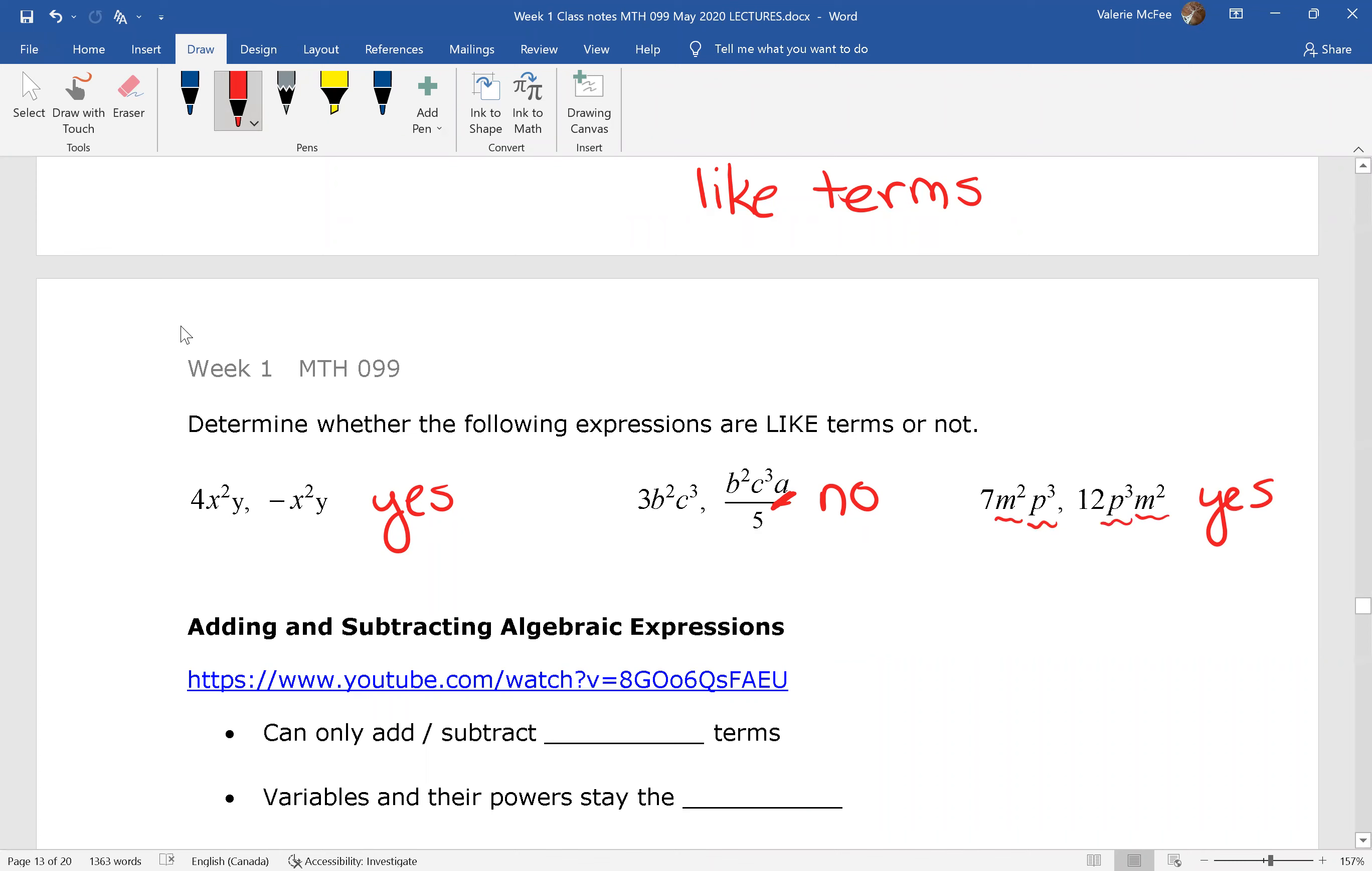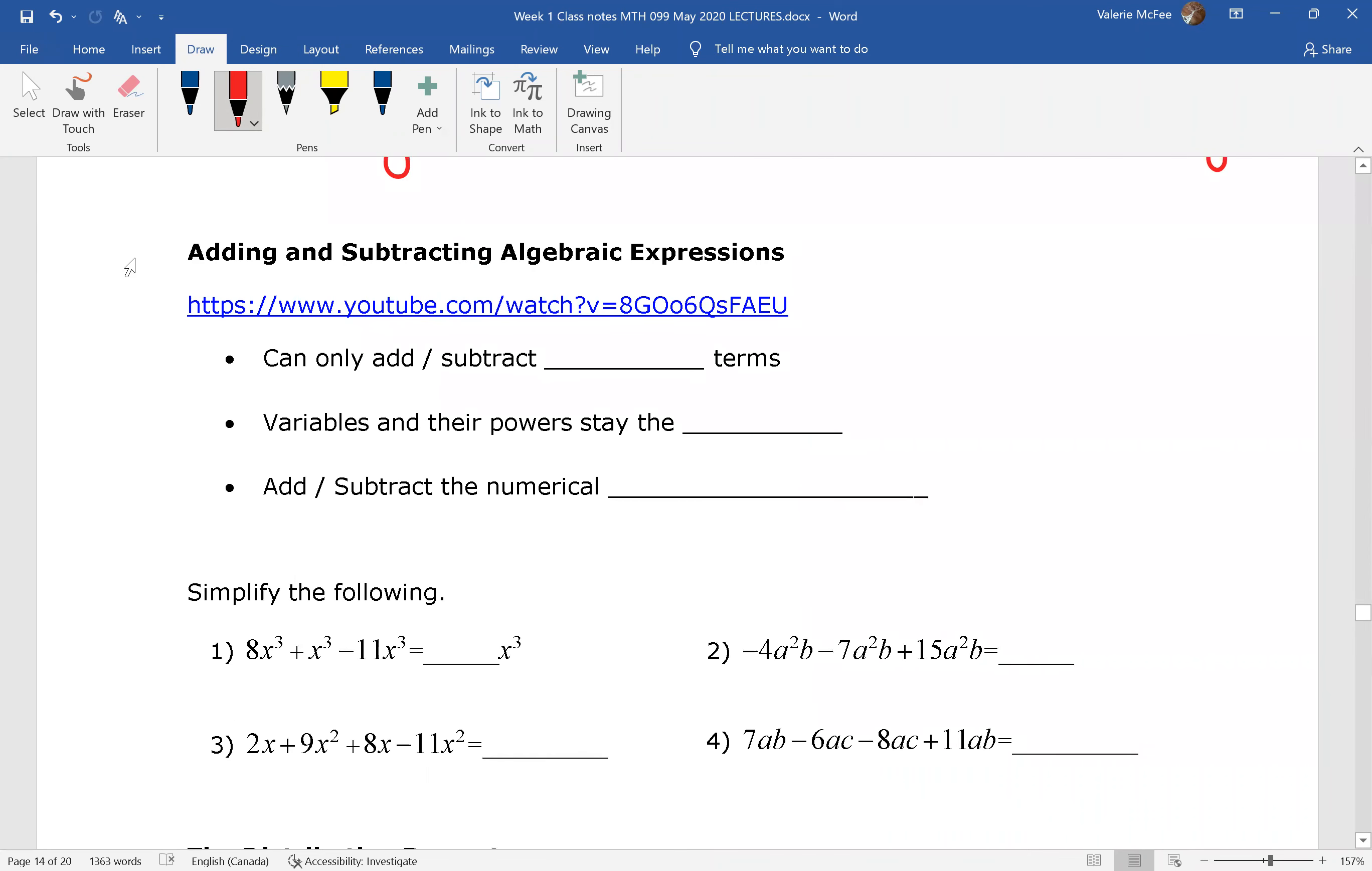So let's talk about adding and subtracting with algebraic expressions. We can only add and subtract like terms. So we're going to be looking for like terms. The variables and their powers stay the same. We add and subtract the numerical coefficients. So let's look at this example. In number one, these are like terms. They all contain x cubed. x cubed stays the same. We add and subtract the numerical coefficients. Eight plus one is nine minus 11 negative two.